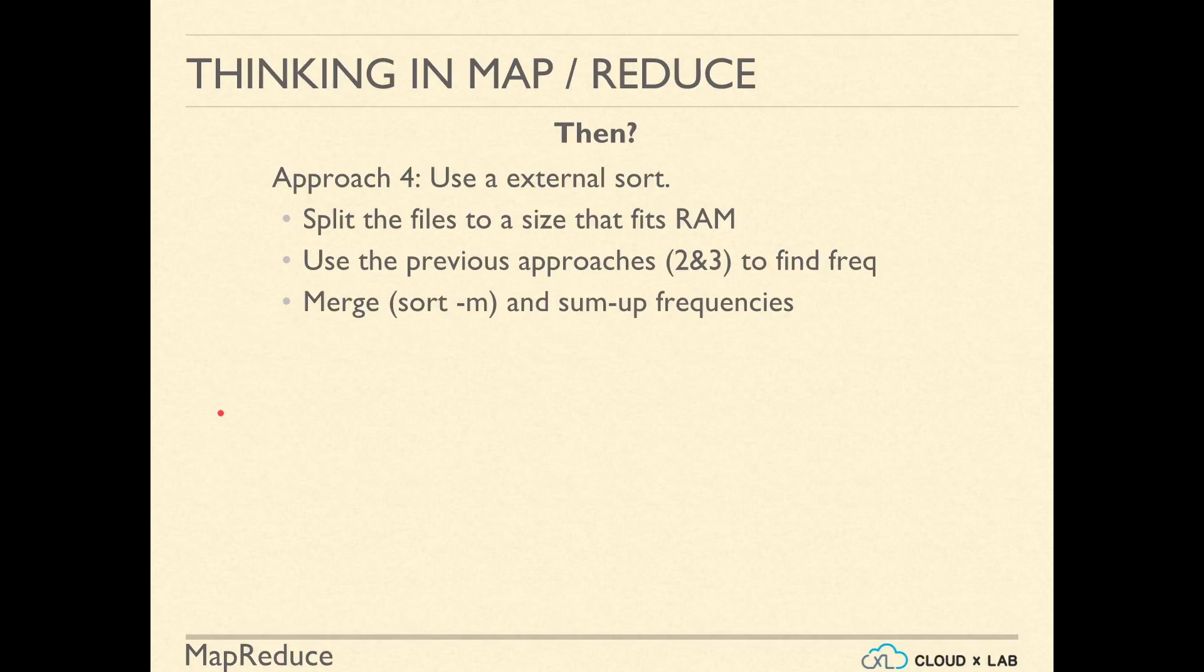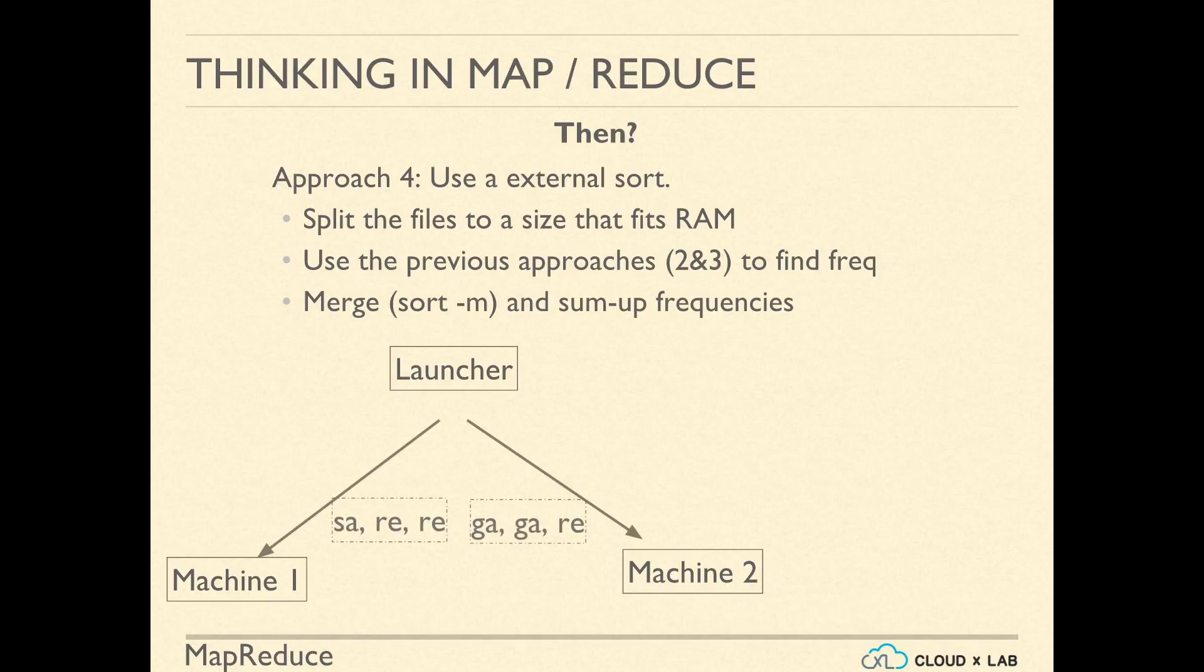So what do we do to alleviate these bottlenecks caused by big data? We may want to use external sort. In external sort, we utilize many computers to do the word count and then merge the results together. Let's say we have three machines: launcher, machine one, and machine two. Launcher breaks the file into two parts and sends the first part to machine one and the second part to machine two. Both machines count the unique words in their part of the text and send the result back to the launcher.